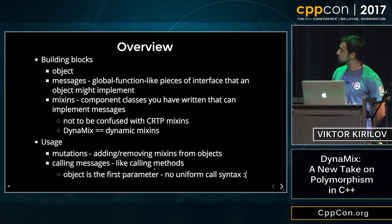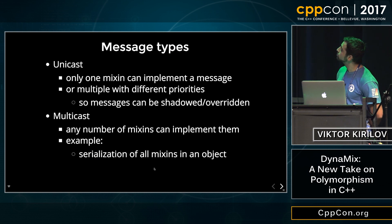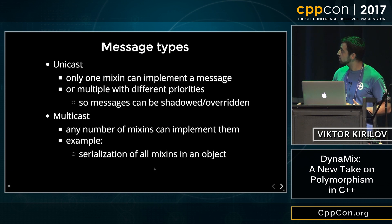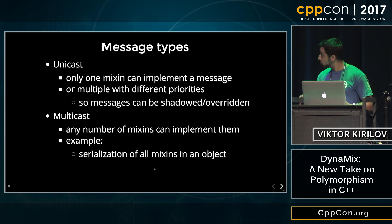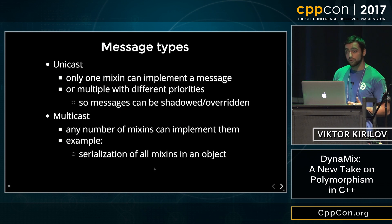Object is always first as parameter — it's unfortunate that there is no uniform call syntax in C++ yet. Messages can be unicast and multicast. With unicast messages, only one mixin within an object can implement a unicast message. If we want more implementers of the unicast message, they have to have different priorities, and only the one with the highest priority gets called — that's how we can implement shadowing and overriding. With multicast messages, multiple mixins within the object can implement the same message, and when we call it, it gets called for all the mixins — that's how we can implement broadcast for all mixins within the object.